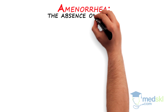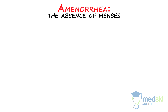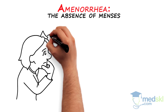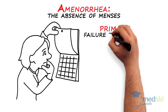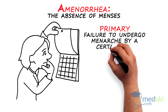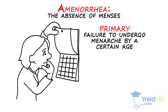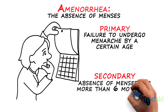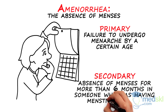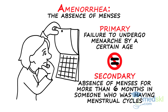Amenorrhea is defined as the absence of menses and can be classified as either primary or secondary. Primary amenorrhea is failure to undergo menarche by a certain age, whereas secondary amenorrhea is the absence of menses for more than 6 months in someone who was previously having menstrual cycles. They are two distinct entities and should be considered as such. Secondary amenorrhea will be reviewed here.